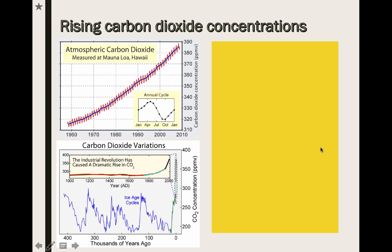If we go back and take a look at some of this data, these are some very famous graphs. The blue line indicates the overall global temperature, and the red line goes up and down because of seasons. We also have data that shows how carbon dioxide concentrations have changed all the way back to 100,000, 200,000, or 300,000 years ago.